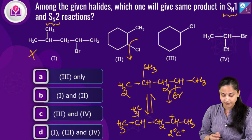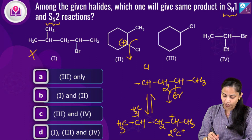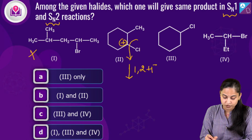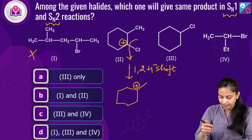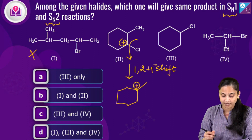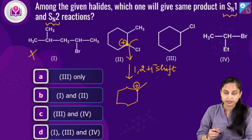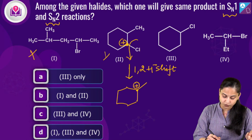For the second option, the leaving group again cleaves out forming a carbocation. In SN1, there is the possibility of rearrangement via a 1,2-hydride shift to give a more stable tertiary (3°) carbocation, so the nucleophile attacks at a different carbon. But in SN2, the nucleophile attacks only at the original carbon. Therefore, we get different products for SN1 and SN2, and option 2 is also ruled out.